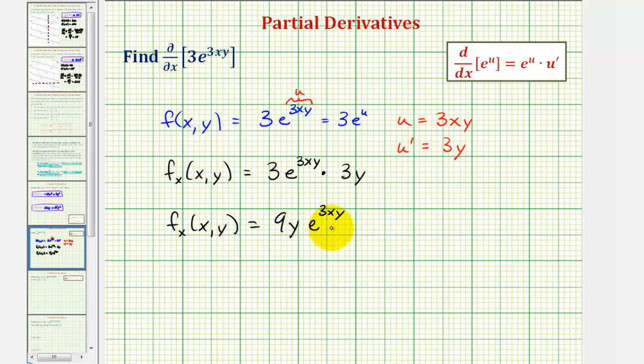And because this is the partial derivative with respect to x, this function would give us the slope of the tangent line at any point on our function f of xy in the x direction.